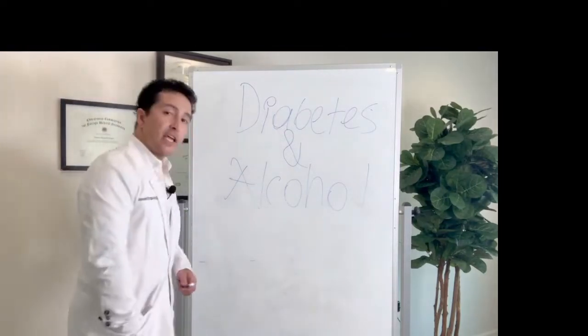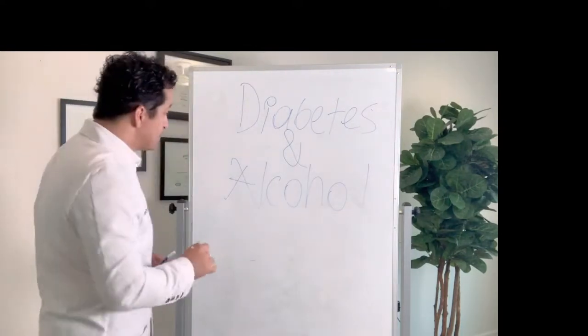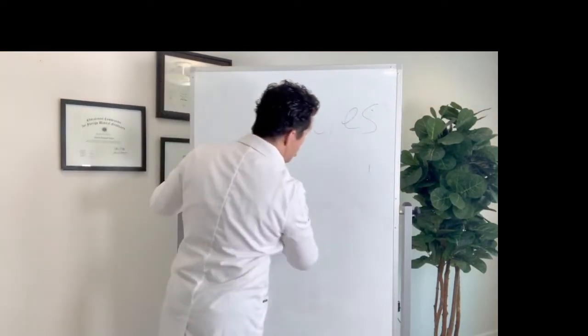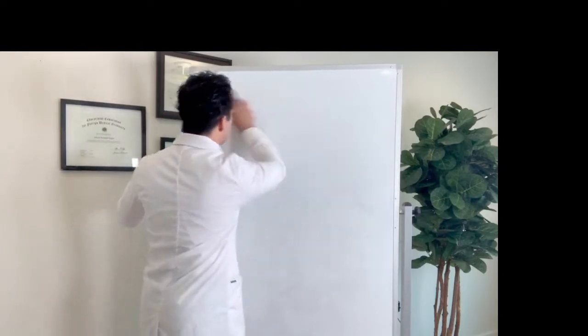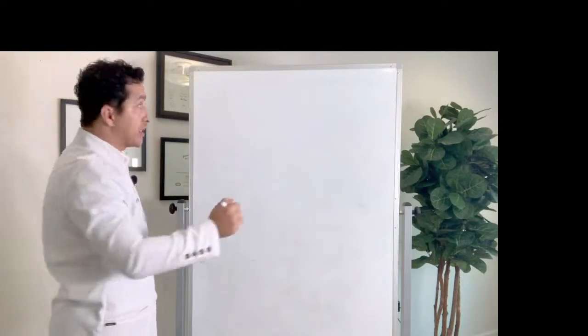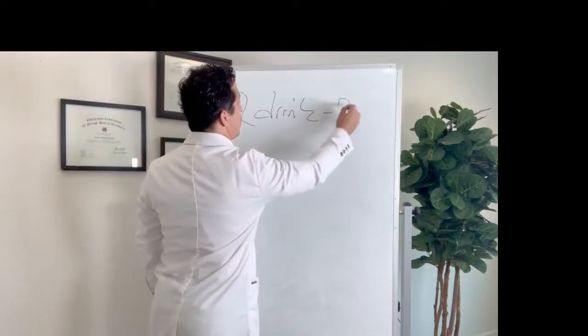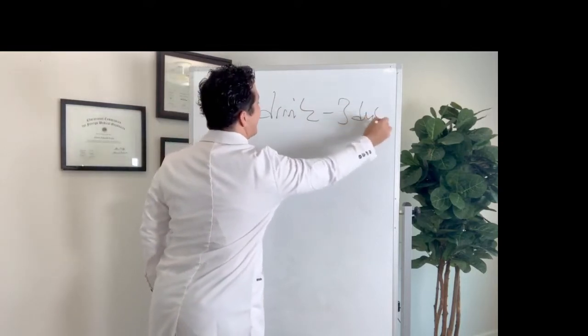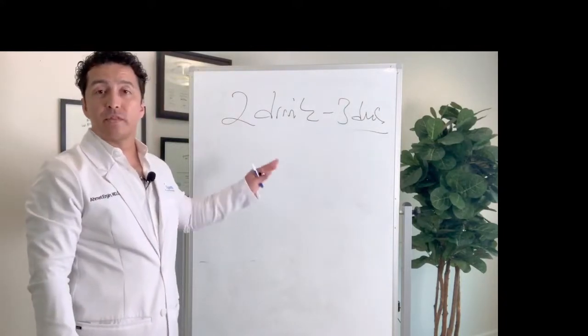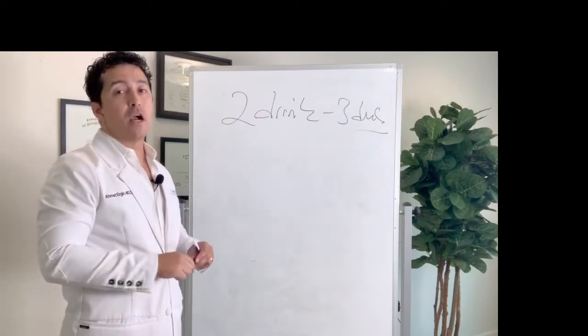So I'll tell you a couple quick guidelines and if you listen to this, you will never get into trouble. Now if you want to drink alcohol, this is how you do it. You have diabetes and you want to have a couple drinks with your friends, just limit it to two drinks total. If you are really having fun, I'll give you one more.